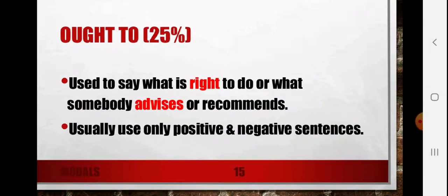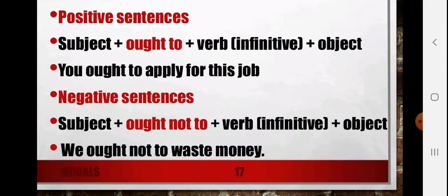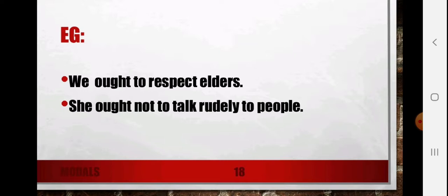The next modal is 'ought to.' We use 'ought to' to say what is right to do or what somebody advises or recommends. Usually we use only positive and negative sentences. The basic structure is: subject + ought to + verb + object. Positive sentence: 'You ought to apply for this job.' Negative sentence: subject + ought not to + verb + object — 'You ought not to waste money.' Examples: 'We ought to respect elders,' 'We ought not to talk rudely to people.' That is how we use the modal 'ought to' in daily life.